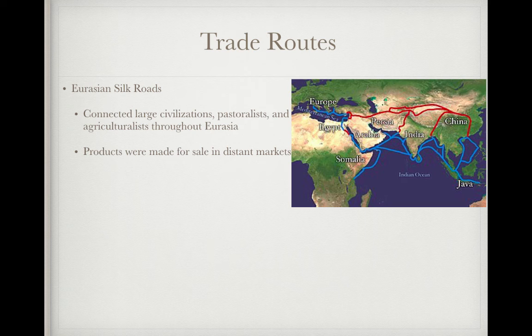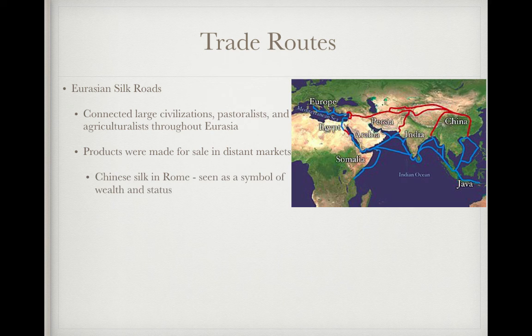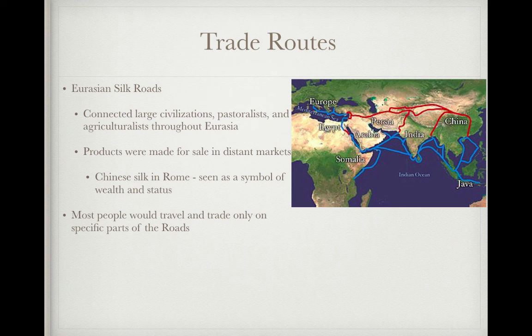Products were made for sale in distant markets — please highlight or circle 'distant markets' for me. It's very important to understand that people are making goods for other people living thousands of miles away; they're not making it just for themselves. Chinese silk in Rome was seen as a symbol of wealth and status, so it was in high demand. Most people would travel and trade only on specific parts of the roads — maybe just this little area here. Most people did not travel the whole Silk Road.